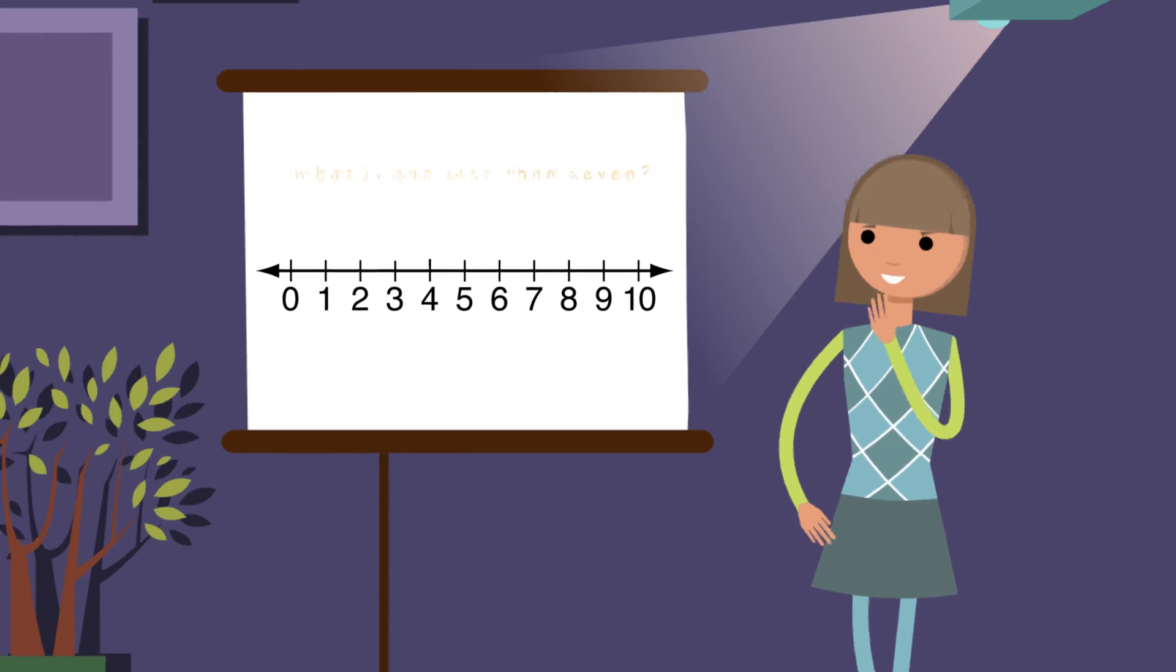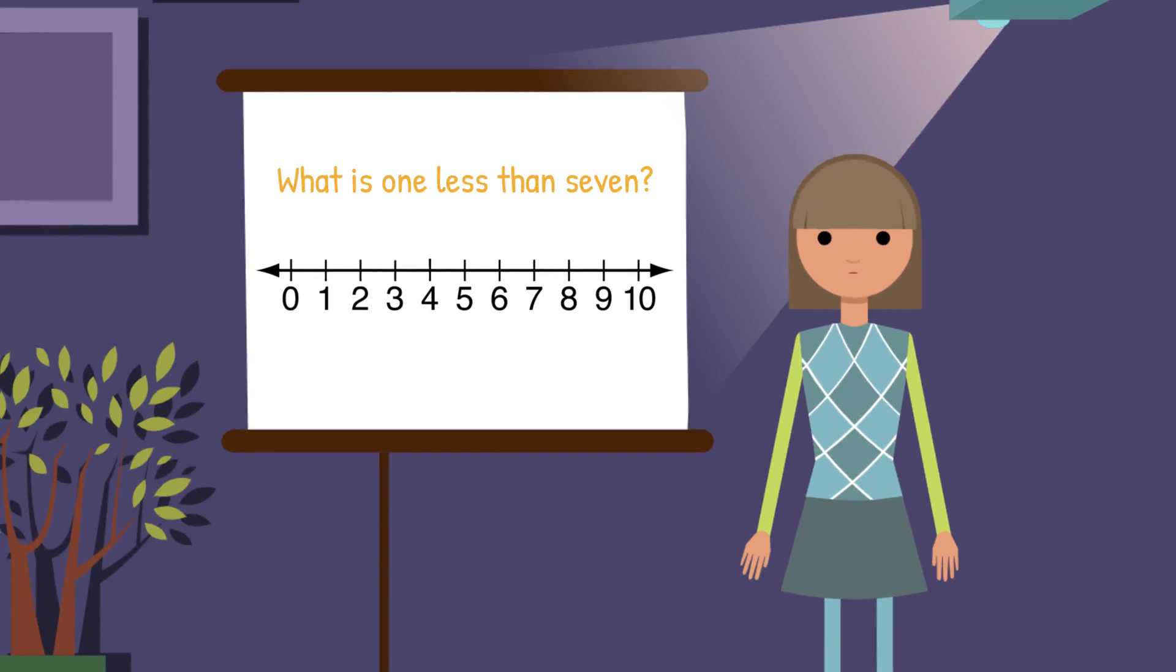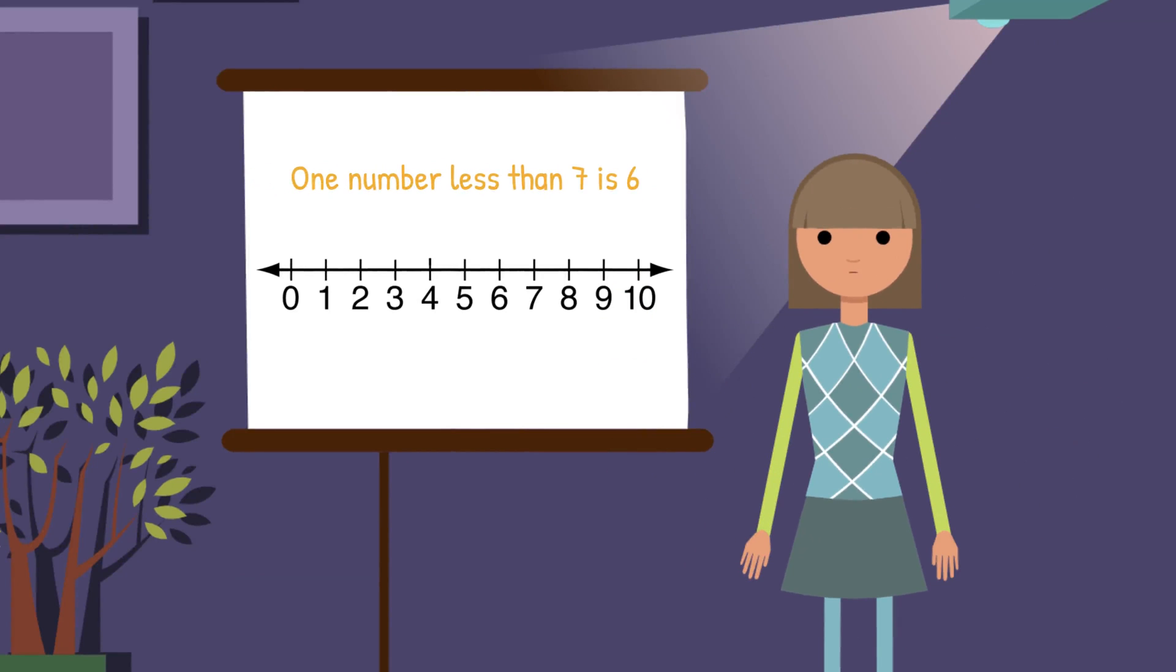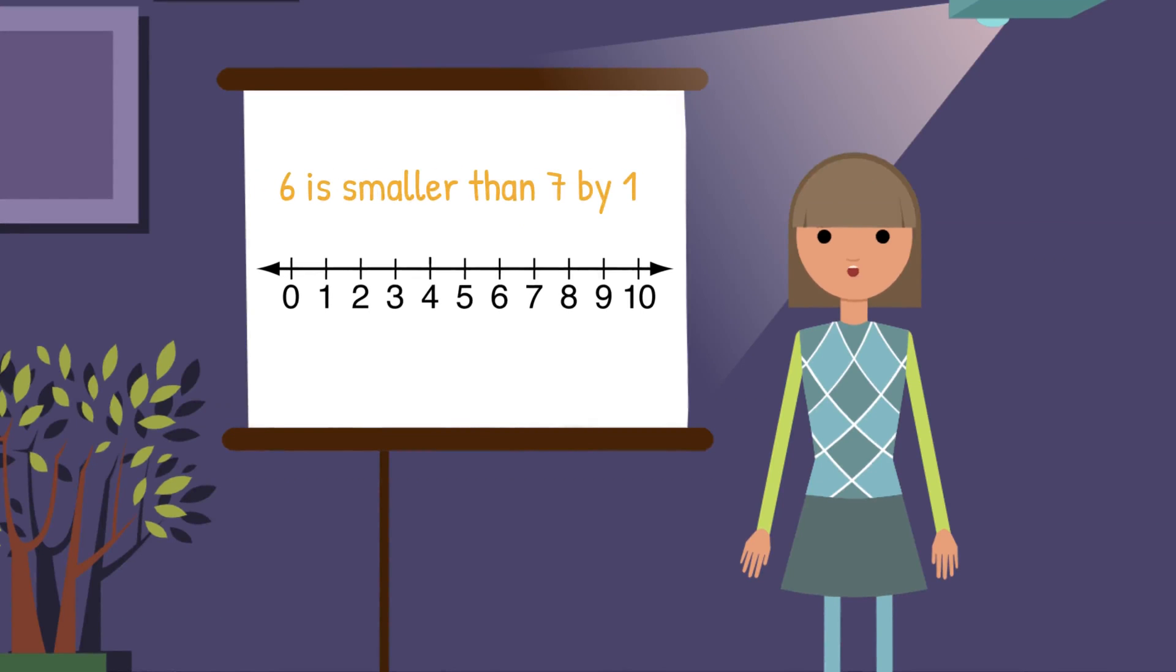What is 1 less than 7? You are so smart! One number less than 7 is 6. Since it is one place behind the 7 on the number line, 6 is 1 less. We can say 6 is smaller than 7 by 1.